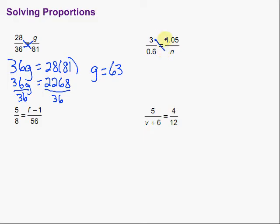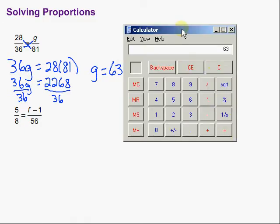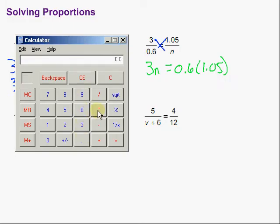Here's our cross products again. 3n and then 1.05. So we have 3n is equal to 0.6 times 1.05. Let's just grab our calculator and figure out what exactly that is. So 0.6 times 1.05, and that's 0.63.